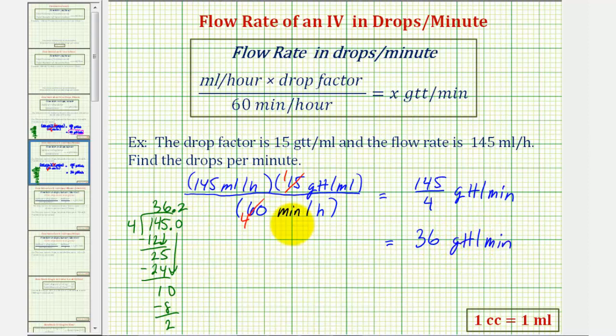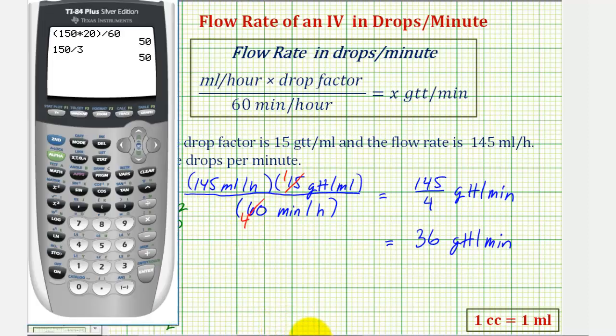Again, let's go ahead and verify this on the calculator. Originally, we had 145 times 15, and then divide all of this by 60. Again, this rounds to 36, or the simplified form of 145 divided by four will give us the same quotient.